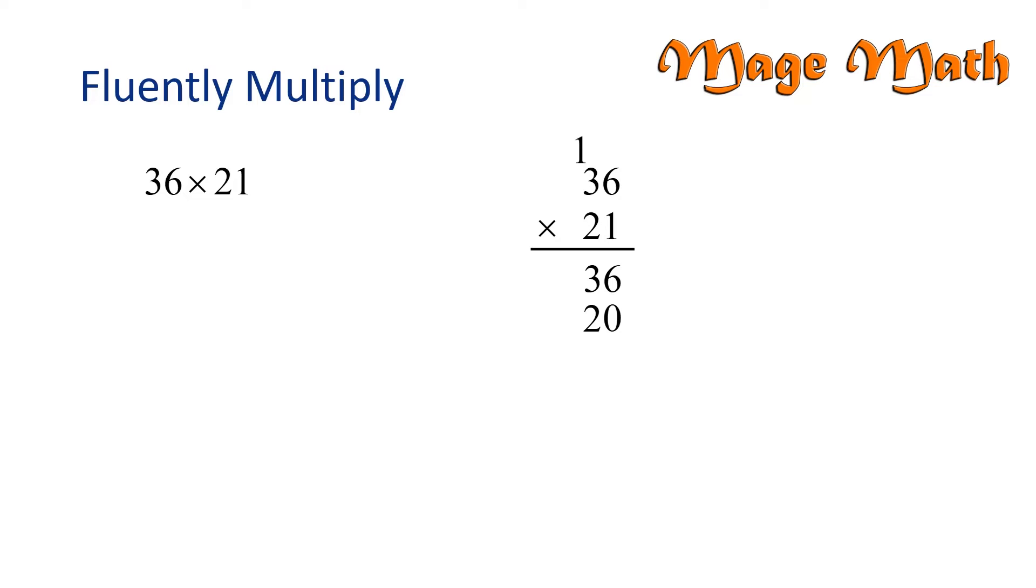Now we multiply two times three, which is six, but we need to add the one that we carried. Six plus one is seven, and we write that in the next column over.